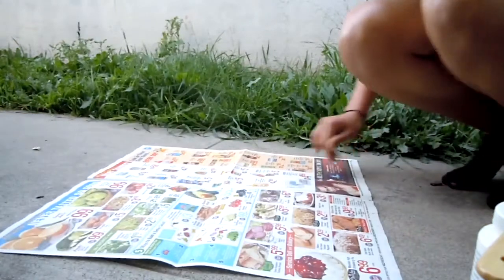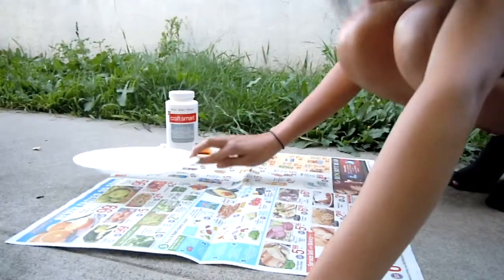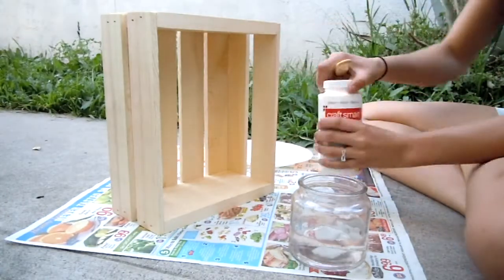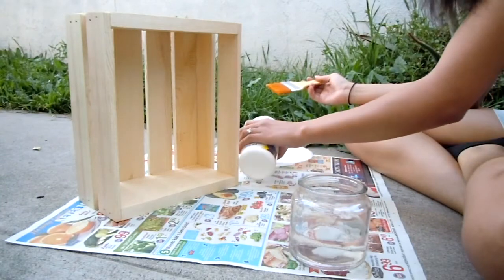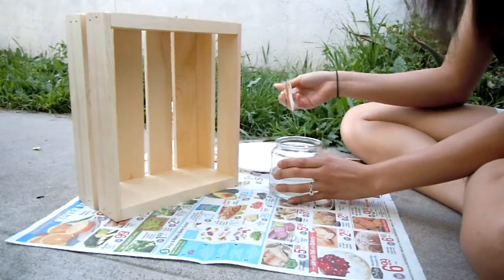First take your newspaper and spread it out outside on the ground and place your paint, your paintbrush, your paper plate, and your jar of water on top of the newspaper along with your crate. Then take your paint and pour it out onto the paper plate and then just begin painting your crate.